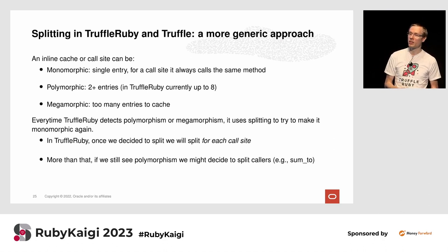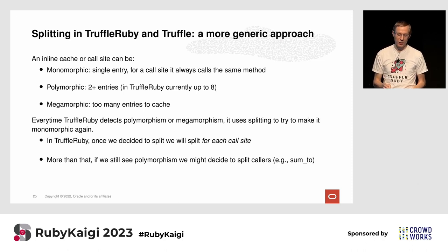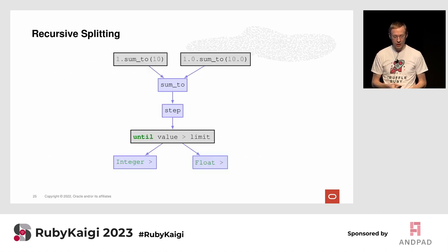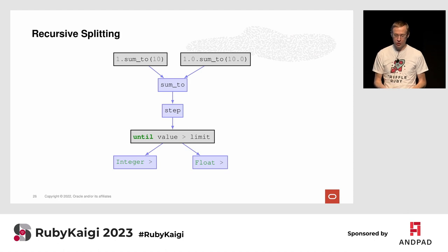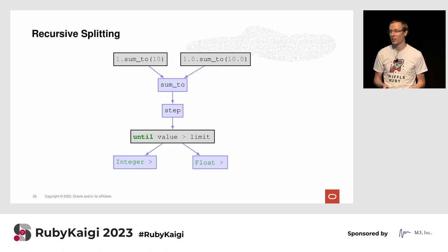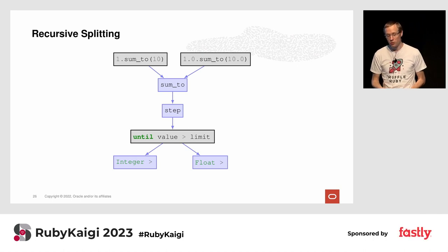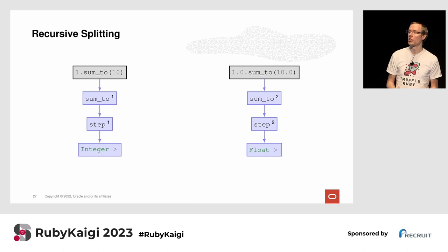In TruffleRuby, once we decide to split a given method like numeric#step, we split it for each call site. And if we still see polymorphism, we might split further up. For example, suppose we have 1.sum_to(10) and 1.0.sum_to(10) — both call sum_to which calls step. Inside step, the comparison 'value > limit' could be integer greater-than or float greater-than. Since we can't split step without sum_to knowing which copy to call, we have to split sum_to instead. After splitting sum_to, each copy is straightforward and very optimizable.